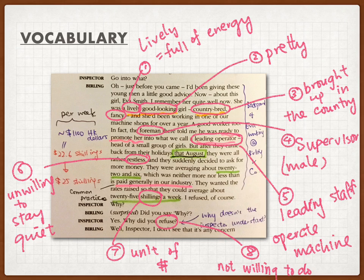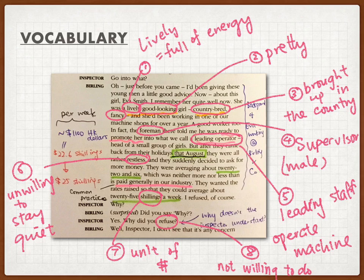Number six, 'restless' — restless means unwilling to stay quiet. They had thoughts they would express without fearing getting into trouble; they didn't want to keep quiet anymore. Number seven, 'shillings' — at that time, shillings was a unit for currency, for money. And the last word, 'refuse' — simply means not willing to do something. When Eva tried to ask for more salary and Mr. Burnley refused, he didn't want to give her more salary.